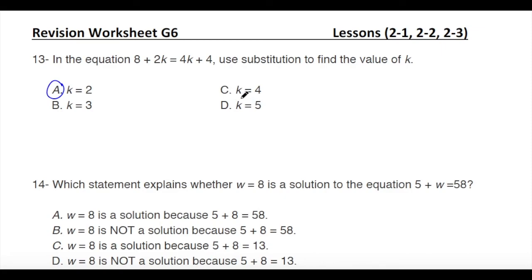If k equals 4: left side is 8 plus 8 equals 16, right side is 16 plus 4 equals 20 — does not work. If k equals 5: left side is 8 plus 10 equals 18, right side is 24 — does not work. So the answer is k equals 2.